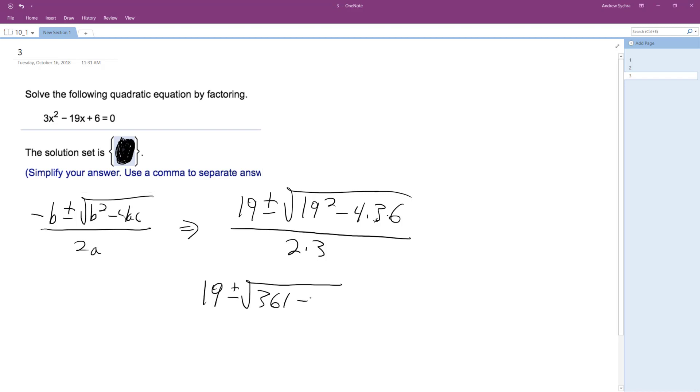So we get 12, 72, yeah. I think it is anyway. All over 6.